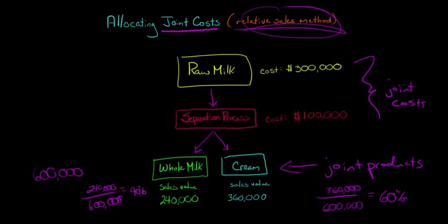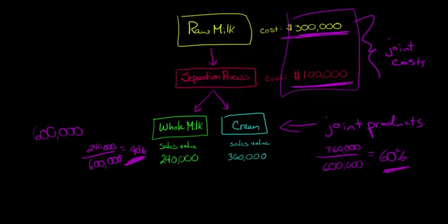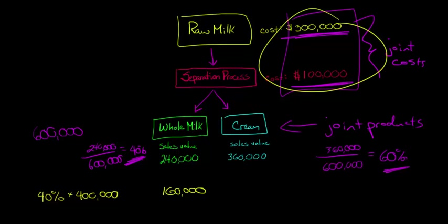And so what are we going to do? We're going to use these percentages, the 40% and the 60%, to allocate these joint costs. So now we have $400,000 in joint costs, and the reason is I just take the $300,000 and add the $100,000. So when we're asking how much in joint costs is going to go to the whole milk, we're just going to take 40% of $400,000. So we've got 40% times $400,000, that's going to be $160,000 allocated to the whole milk.